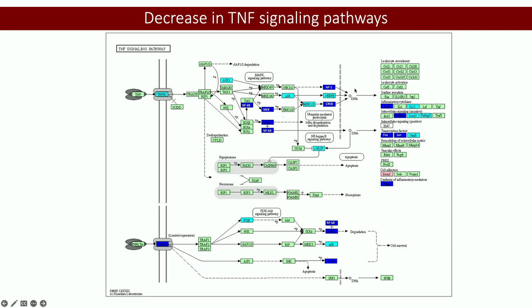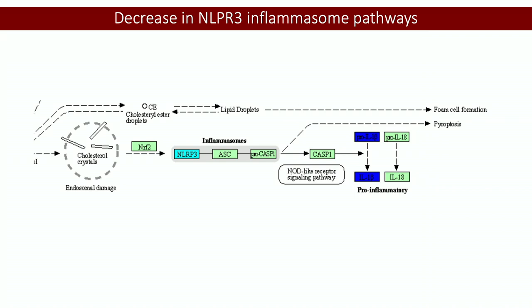TNF signaling was broadly decreased, partly regulated through the PI3K pathway. NLRP3 signaling we think was also decreased. These are mostly in CD14 populations. My point here is that there's a lot of data to learn from — there are some key pieces we don't know yet, but we're working toward understanding them.